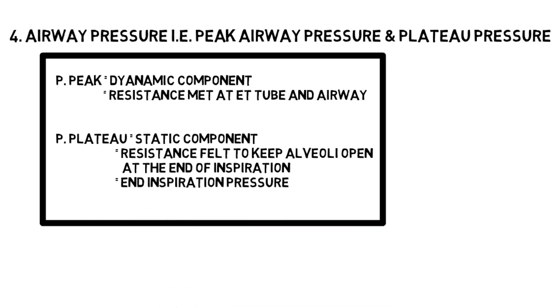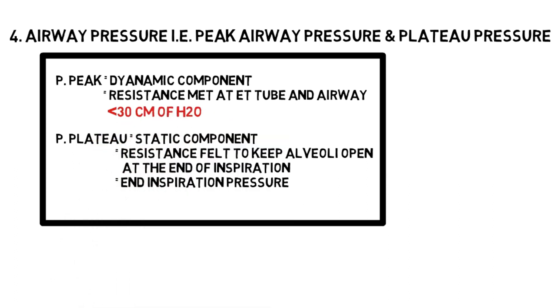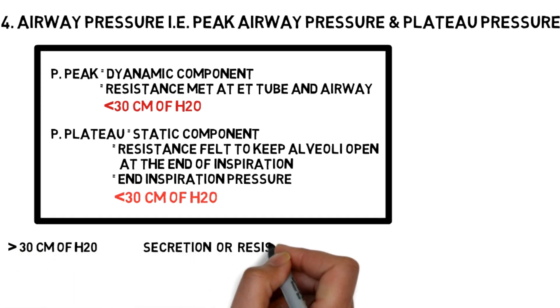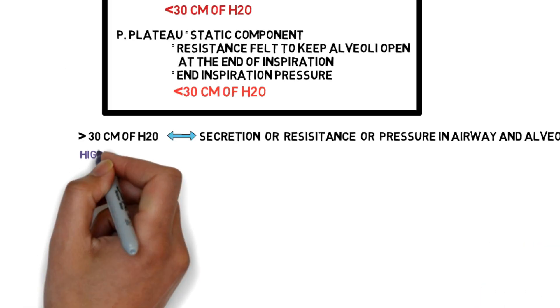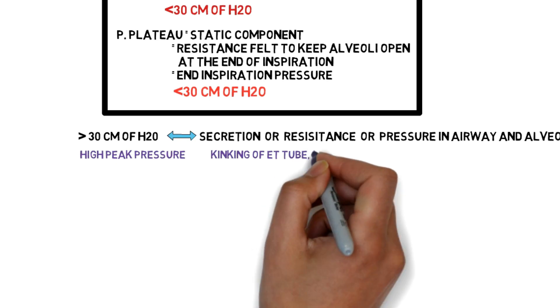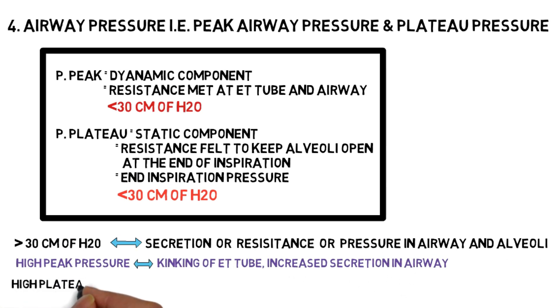Both these values should be less than 30 cm of water. Values greater than 30 indicate secretions or some resistance in the airway or alveoli. High peak pressure indicates kinking of the tube or secretions in the airway, whereas high plateau pressure can indicate more serious conditions like pneumothorax.